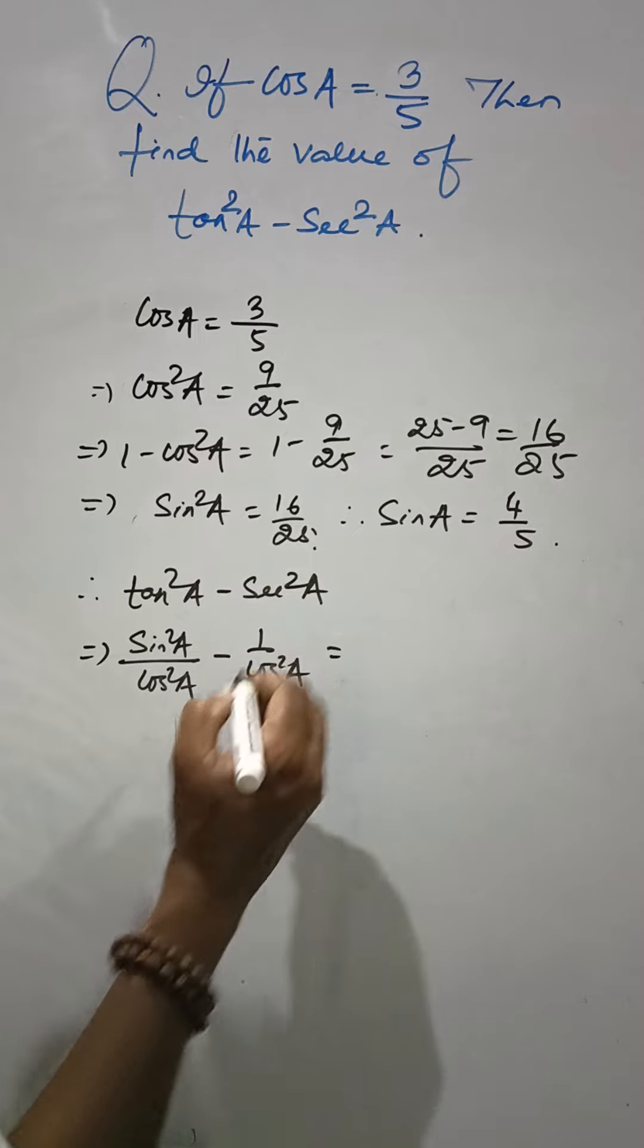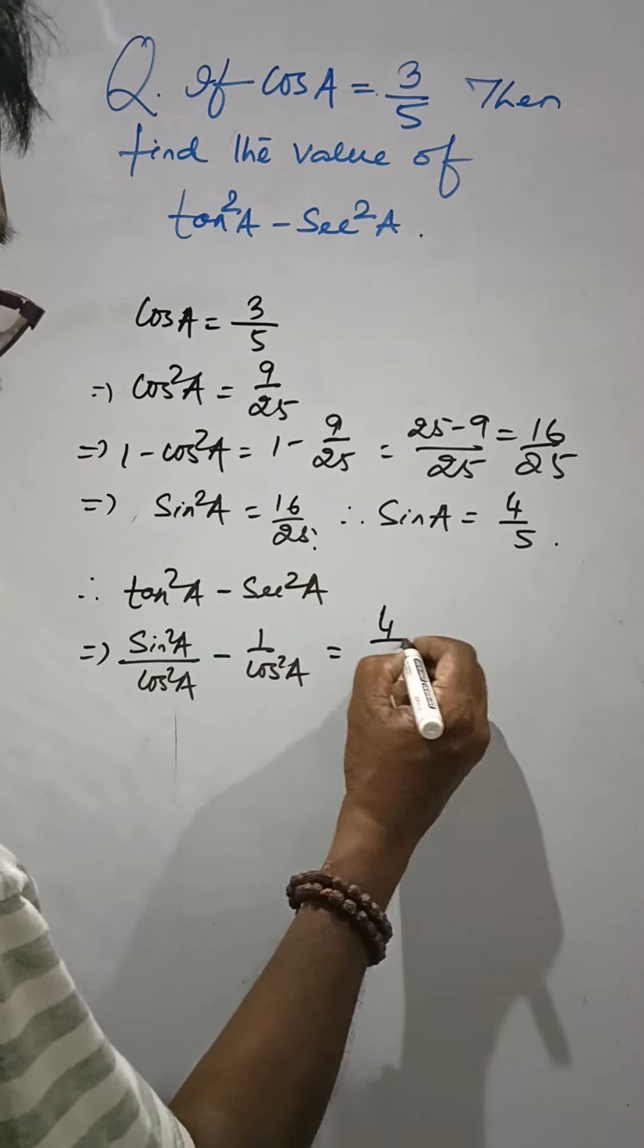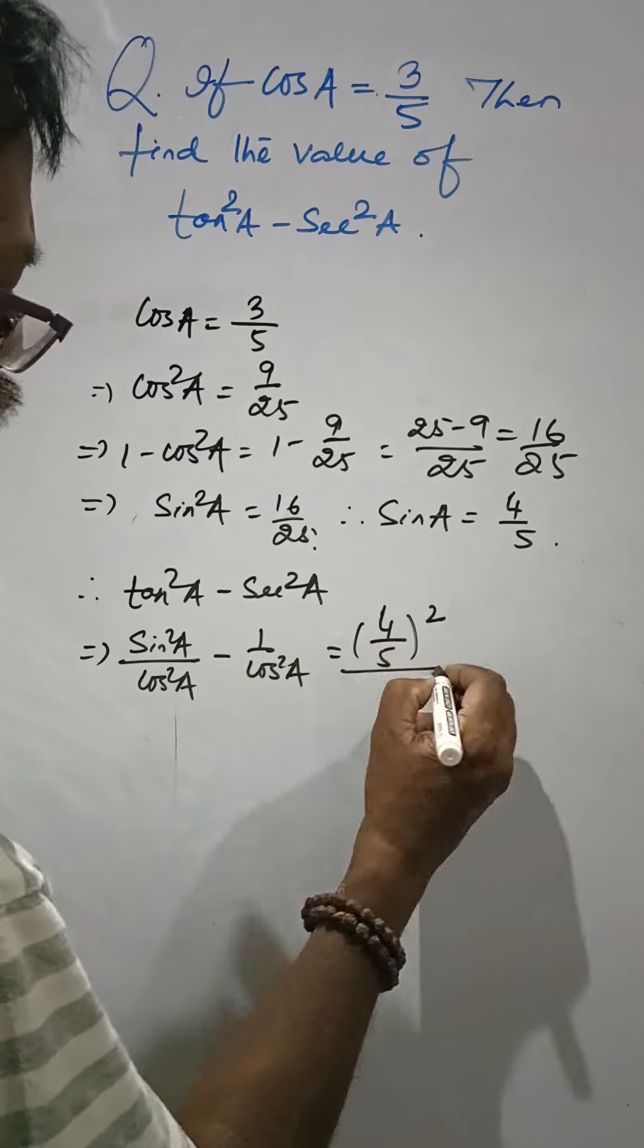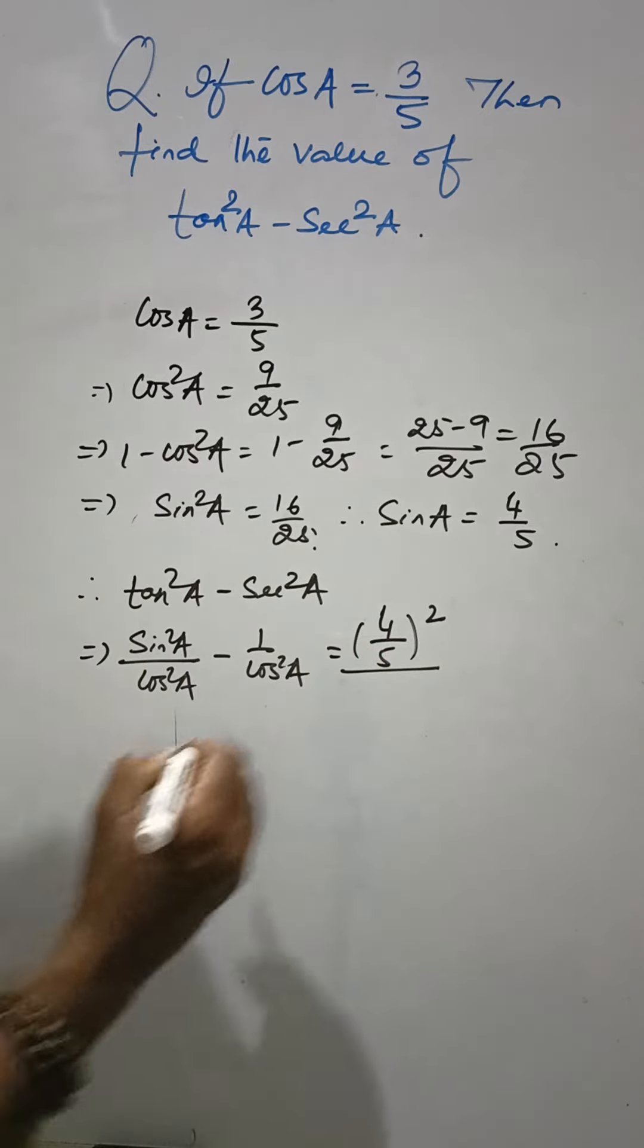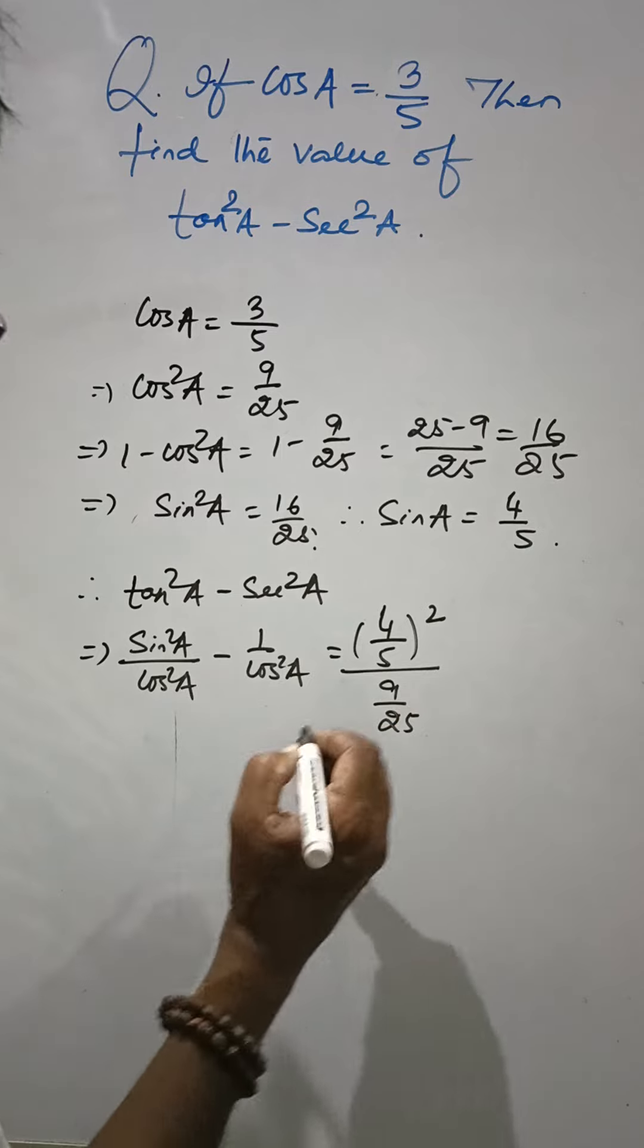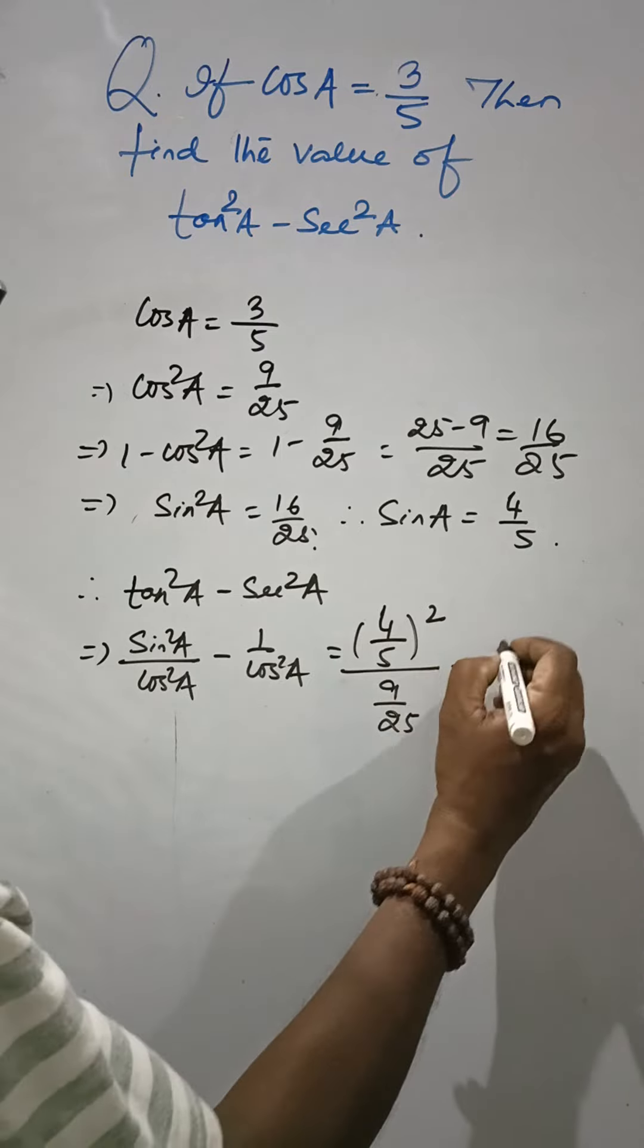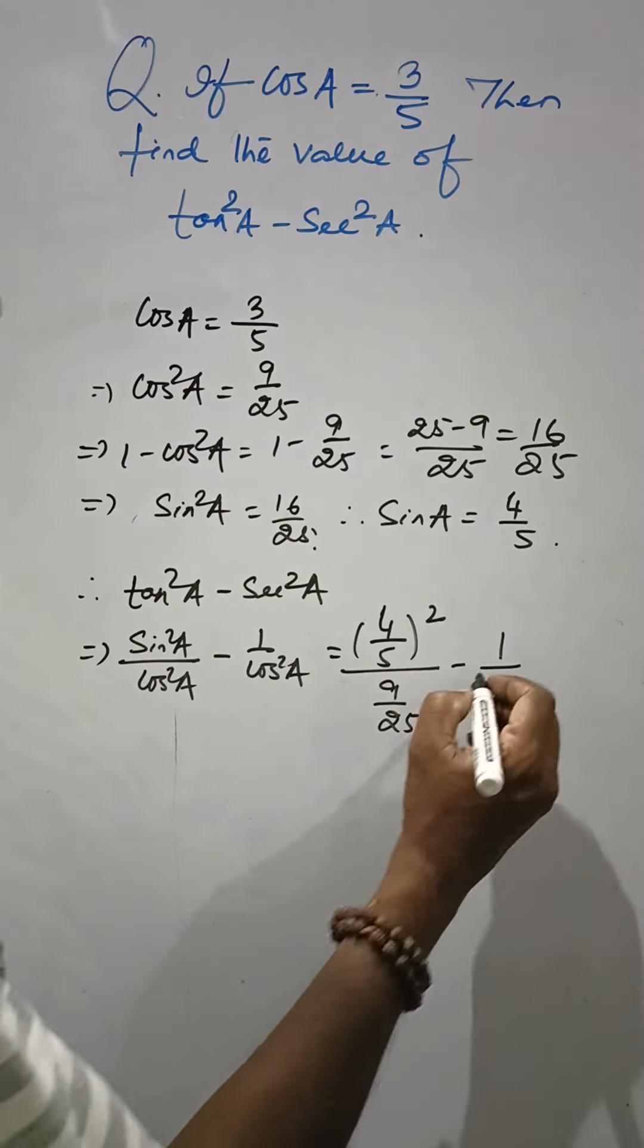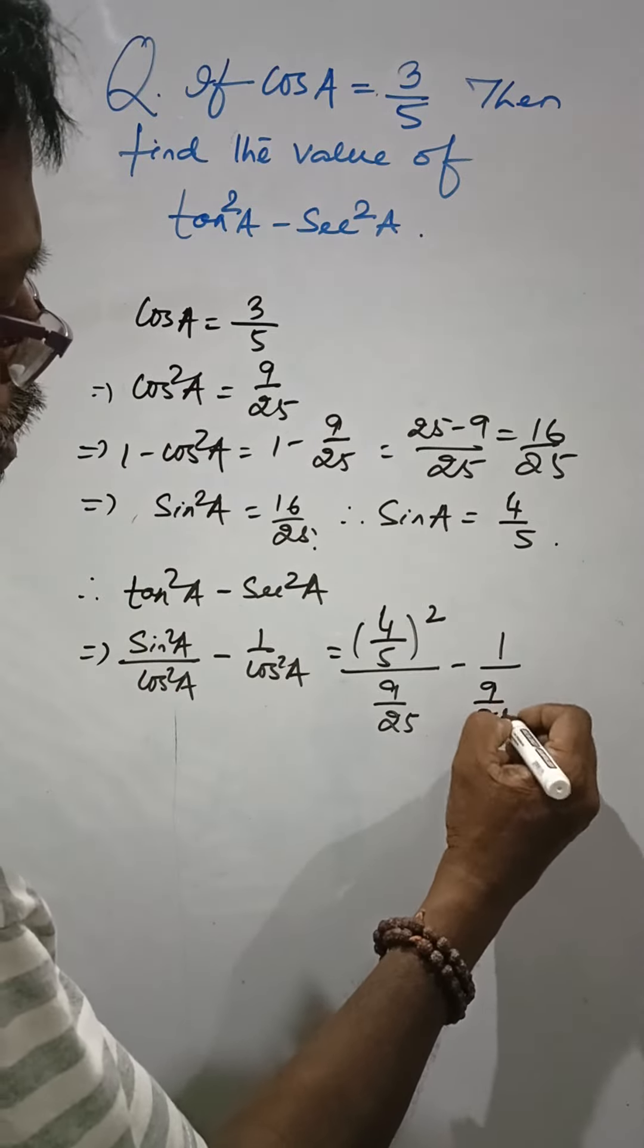sin square A is 4 by 5 square divided by cos square, that is 9 by 25.